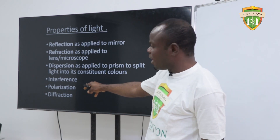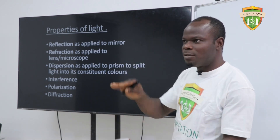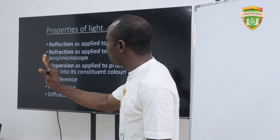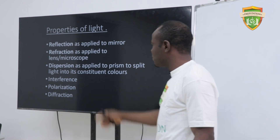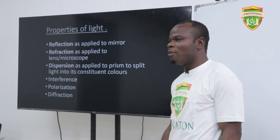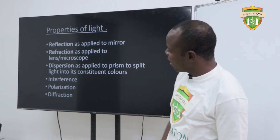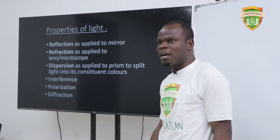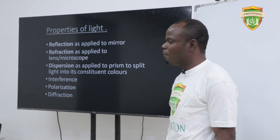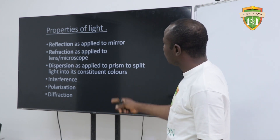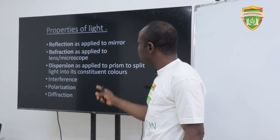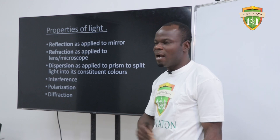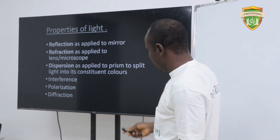Polarization is when you focus a ray onto a plane — then we say the light is polarized. The last property is diffraction, which involves the bending of light waves around corners.